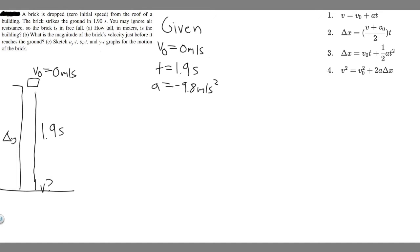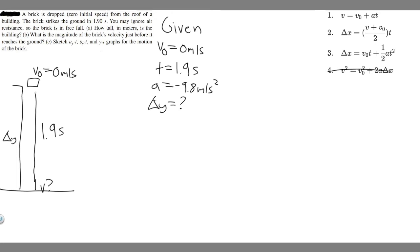For part A, we're trying to find delta y, the height of the building. We're given v₀, t, and a, and solving for delta y. Looking at the kinematic equations: the fourth one doesn't contain t, so we skip it. The first one doesn't contain delta y, skip it. The second doesn't contain acceleration, skip it. So the only one left is the third equation, which we'll use.